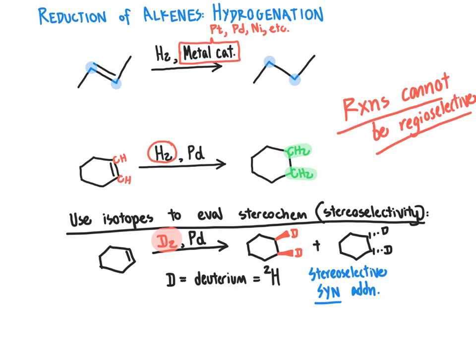Reactions adding H2, or Cl2, or any two identical groups across a double bond cannot be regioselective. Likewise, if the alkene is symmetrically substituted at both carbons of the double bond, the reaction can't be regioselective either. To conclude our discussion of hydrogenation: you are expected to provide the products of these reactions given an alkene plus H2 and a metal catalyst. You do not need to provide a mechanism or electron-pushing arrows — just show the final product, which always corresponds to adding a hydrogen to each of the two carbons of the carbon-carbon double bond.